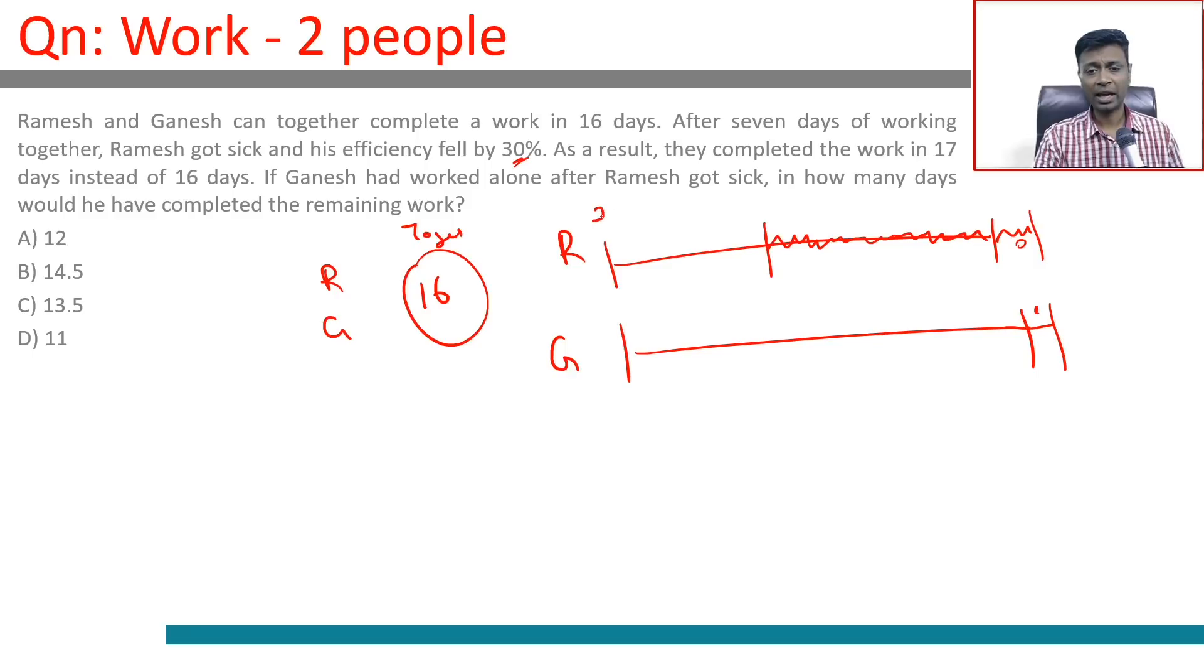Let's say Ramesh brings in x every day. After seven days, this is the seven day mark, he brings only 0.7x. In the original schedule of 16 days there are nine more days to go. In these nine days Ramesh is going to fall short by 2.7x, which is 0.3 into 9.